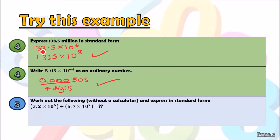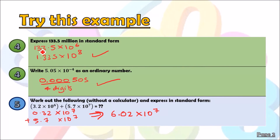We have two numbers already in standard form: one with 10 to the power of 6, and one with 10 to the power of 7. When adding standard form numbers, we must make the powers the same. I raise the first number up to a power of 7, shifting the decimal point, giving 0.32 times 10 to the power of 7. Then we add: 5.7 plus 0.32 equals 6.02 times 10 to the power of 7. That's it — just make the powers match and add.